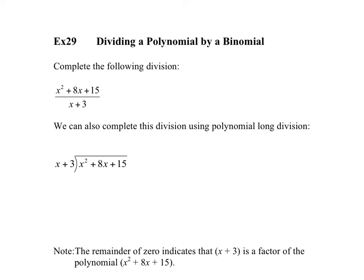Welcome to exercise 29: dividing a polynomial by a binomial. Let's complete the following division: x squared plus 8x plus 15 divided by x plus 3. To divide that out, we need to factor the numerator, so we're going to factor this to x plus 3 times x plus 5, all divided by x plus 3.